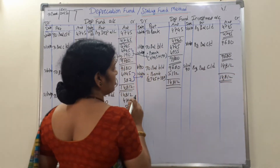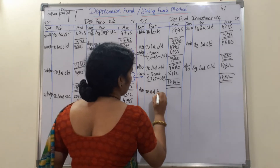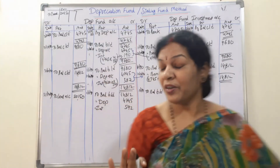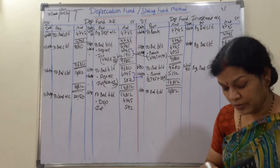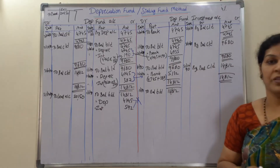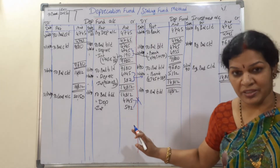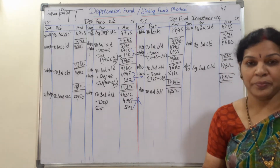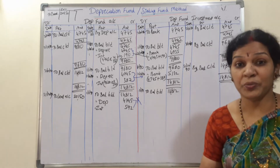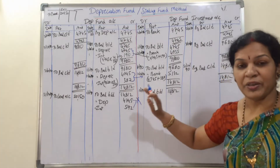Fourth year: balance brought down 14,812. Last year we are not going to invest. We are not investing because only four years we are preparing this. If we invest it, to get interest one more year is required. We are closing this lease at four years - if we invest it, we need to wait one more year to get the interest. That is the reason we don't put investments in the last year.